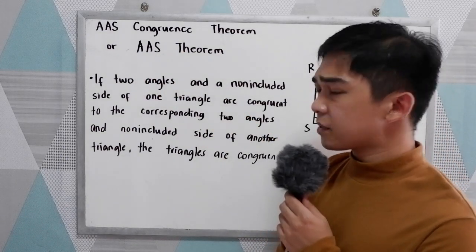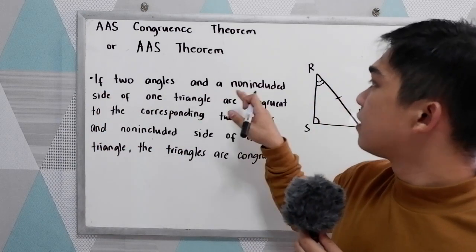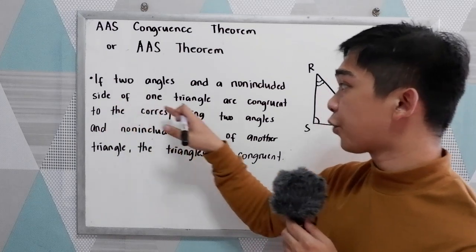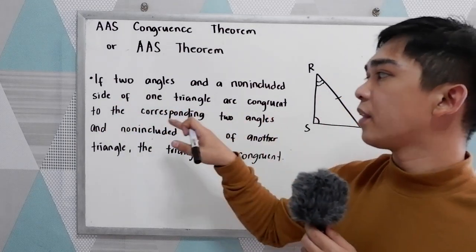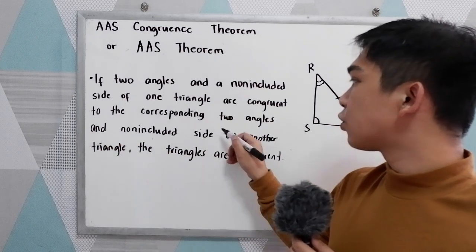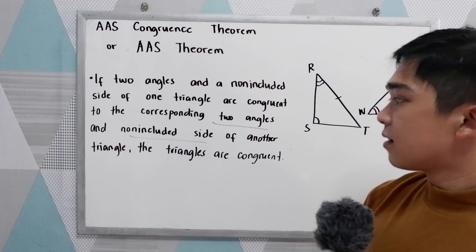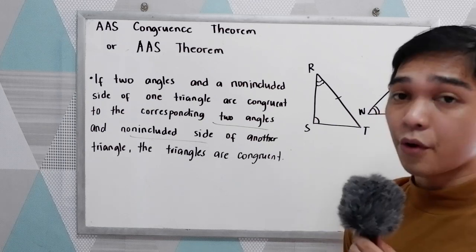The theorem states that if two angles and a non-included side of one triangle are congruent to the corresponding two angles and non-included side of another triangle, the triangles are congruent.